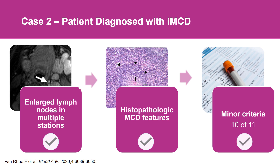Ten out of 11 minor criteria were achieved for this patient. Between the multi-organ failure, the systemic inflammatory syndrome, and the fluid accumulation observed, this patient met nearly all 11 minor criteria for the diagnosis. Importantly, exclusionary criteria — including lymphoma, a number of autoimmune conditions, and infectious diseases — were all ruled out. So this patient has idiopathic multicentric Castleman disease.